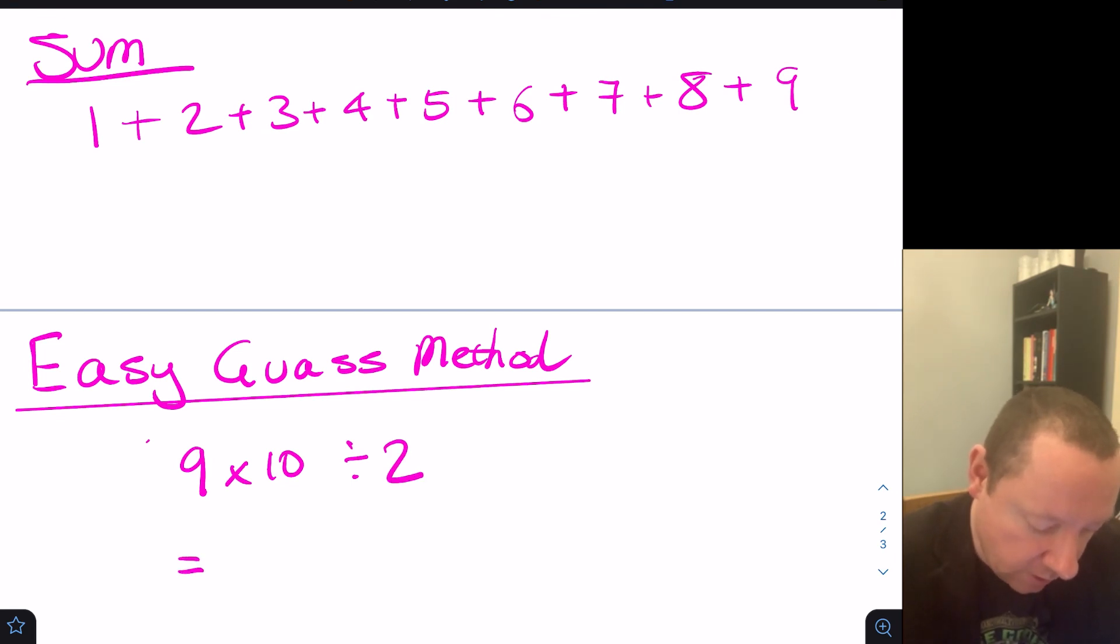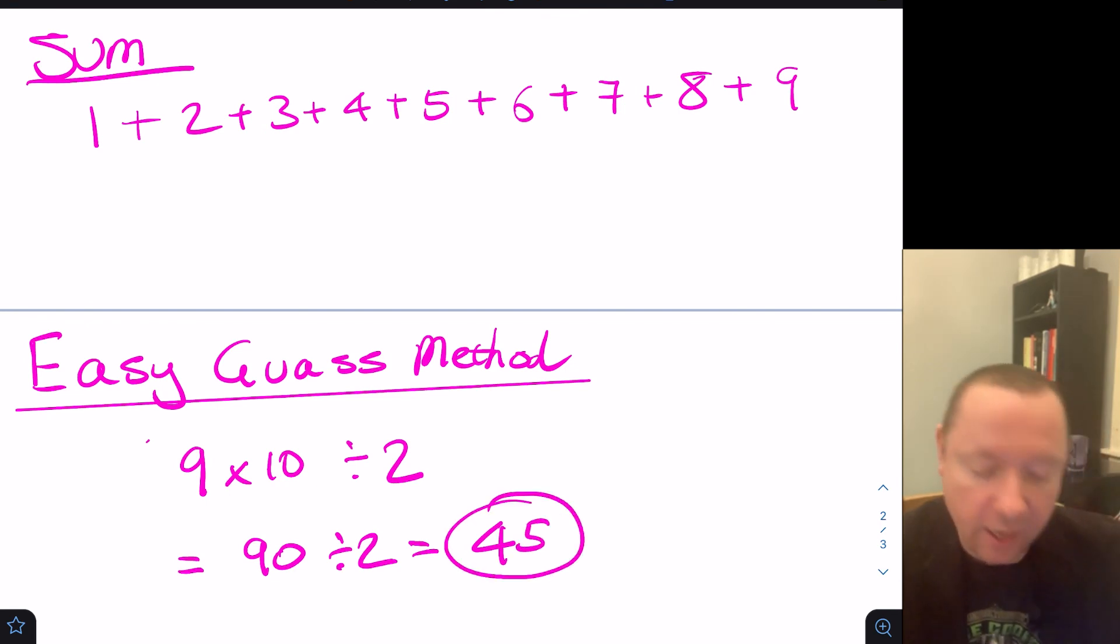So in this case, I've got 9 × 10 = 90 ÷ 2 = 45, which is what you'll get if you add up all the numbers separately.